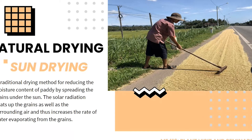Under natural drying, we have sun drying — a traditional drying method for reducing the moisture content of paddy by spreading the grains under the sun. Solar radiation heats up the grains and surrounding air, increasing the rate of water evaporation. Sun drying is commonly used in our country, done on roads, rooftops, or on trays. Examples of products using sun drying include fish, rice, coffee, meat, and vegetables.